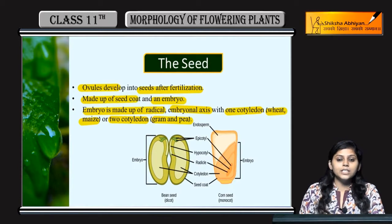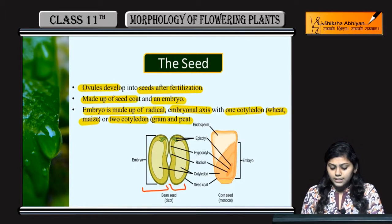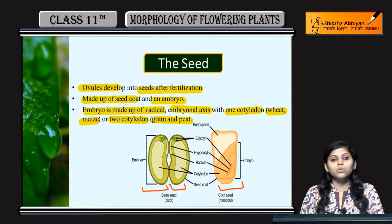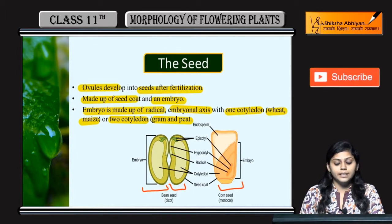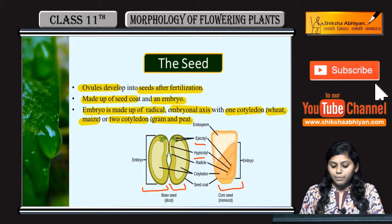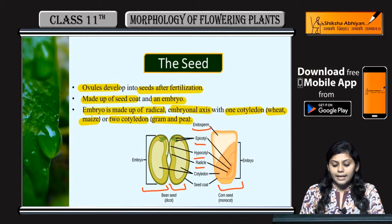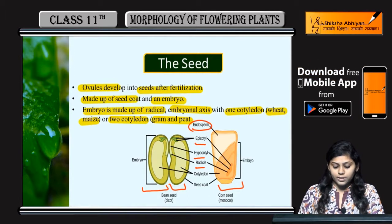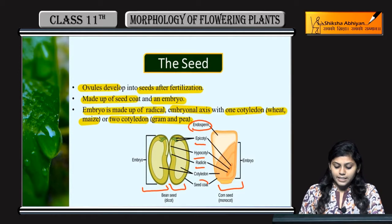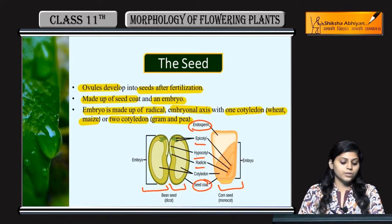You can see the structure. Dicots have two cotyledons; monocots have one cotyledon. Epicotyl, hypocotyl, and radicle regions are present. In the case of monocots, endosperm is also present, and seed coat is present as well.